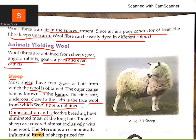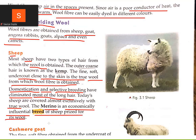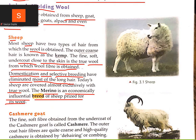Domestication and selective breeding have eliminated most of the long hair, so sheep are covered almost exclusively with true wool. The Merino is the economically important breed of sheep, prized for its fine wool.